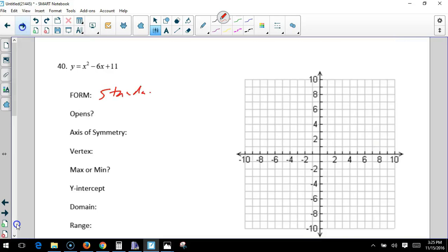This standard form is going to open up to the positive. The axis of symmetry, we don't know yet. Here's where we identify A, B, and C: 1, negative 6, and 11.